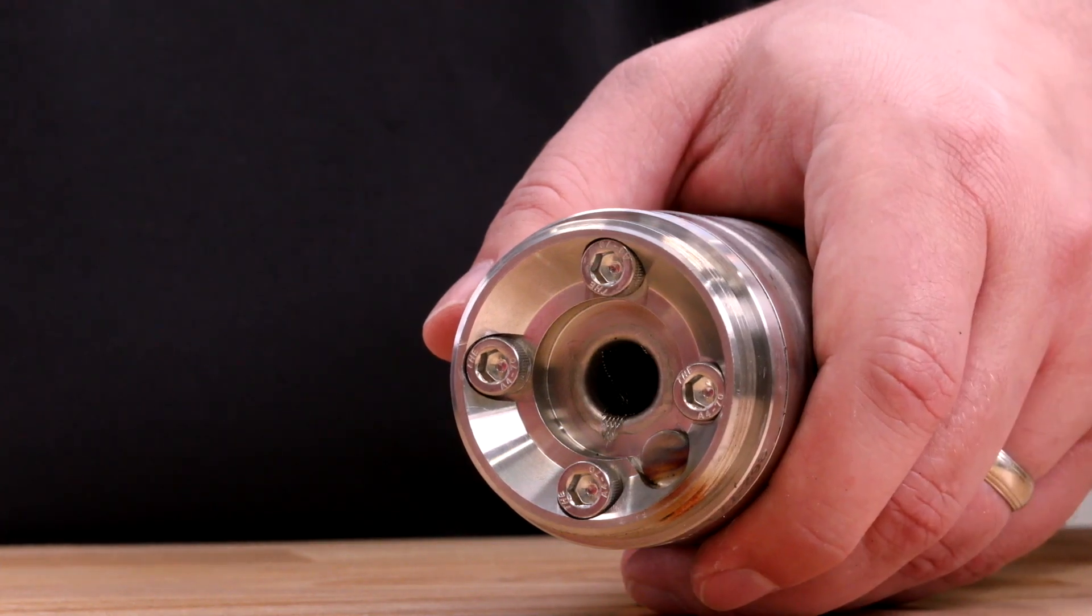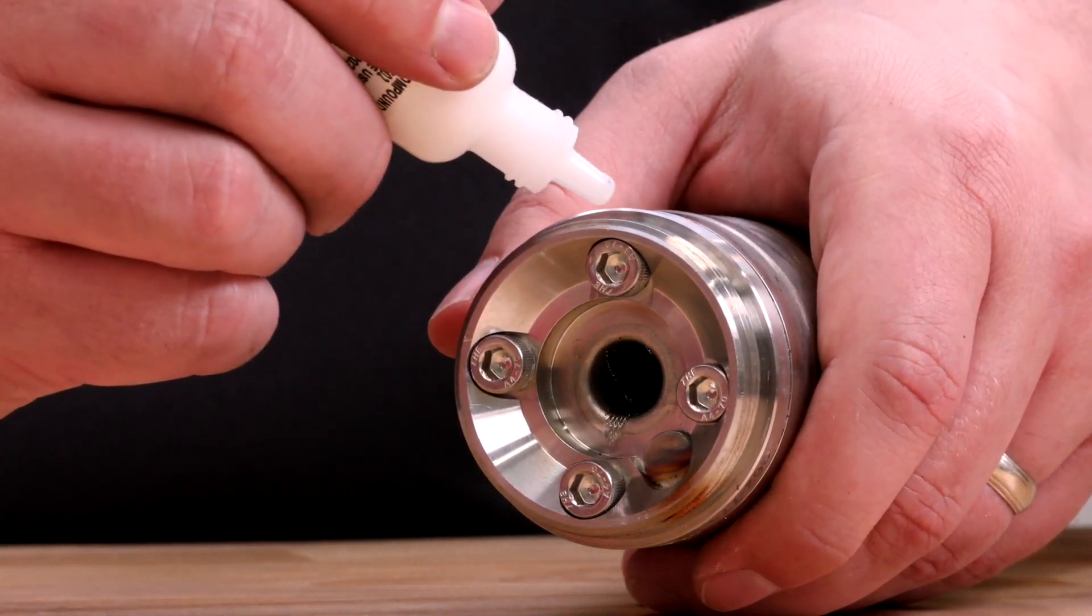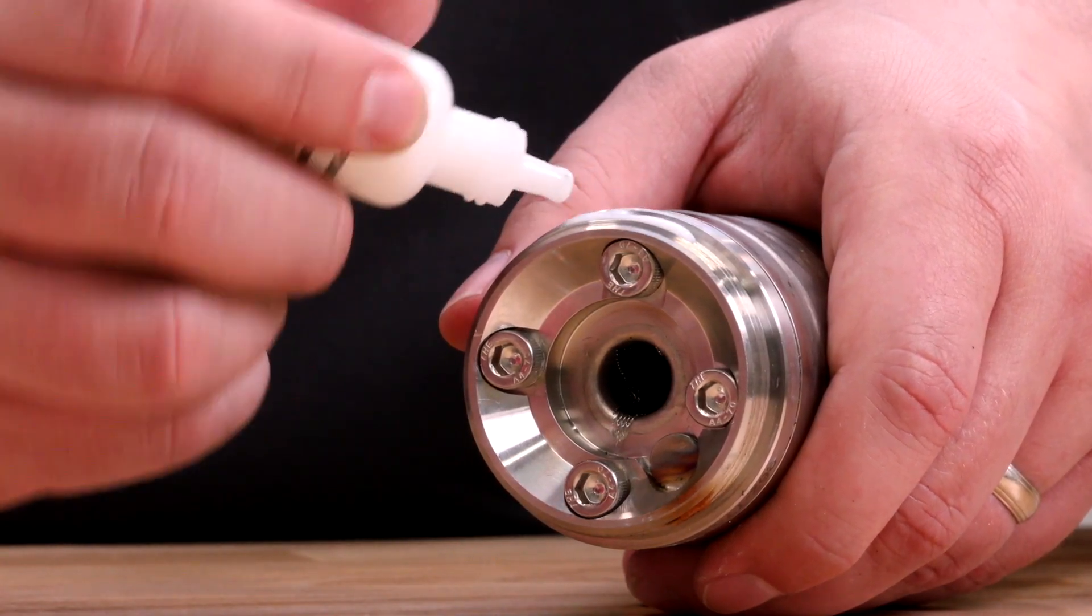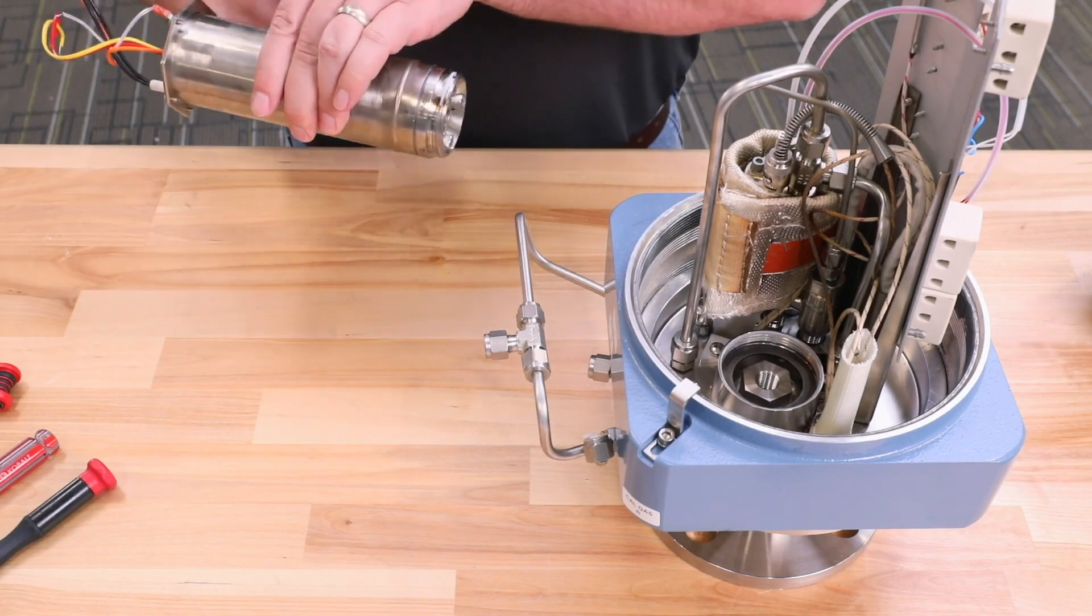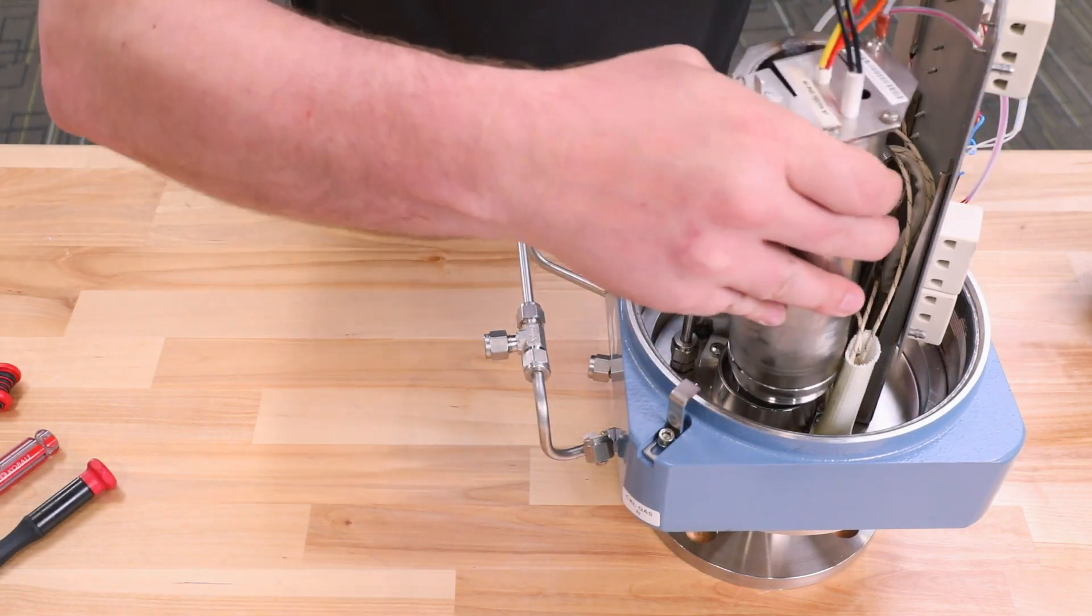Now apply anti-seize compound to the threads of the O2 cell and heater strut assembly. Install the assembly on the sensor housing and tighten. Do not overly tighten.